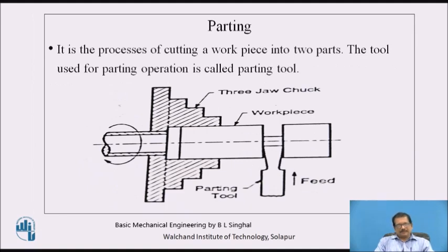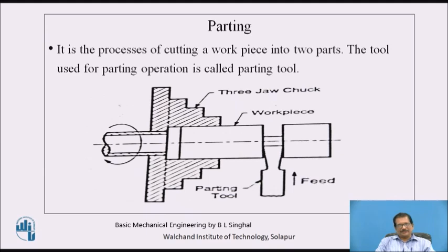Next is parting. It is the same as grooving, but in this case we will be cutting the workpiece into two pieces. It is the process of cutting a workpiece into two parts. The tool used is called a parting tool. Instead of maintaining the depth of the groove, we travel the tool till the axis so that the workpiece is divided into two pieces.